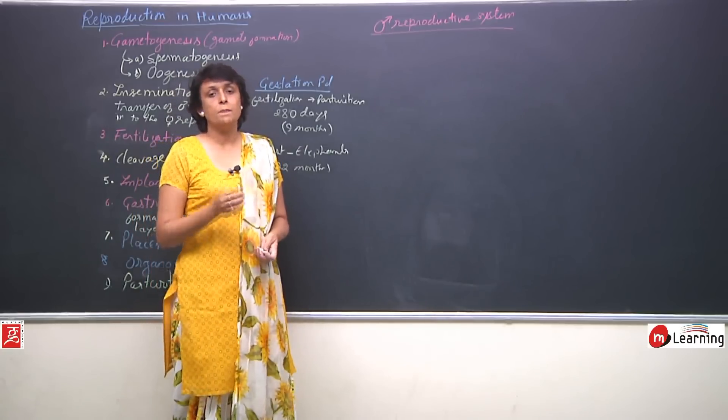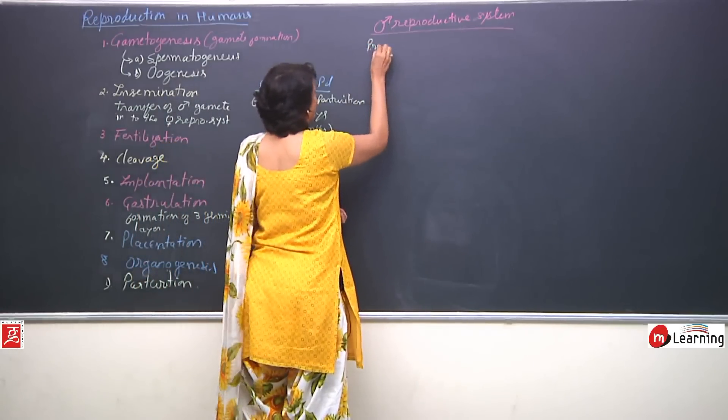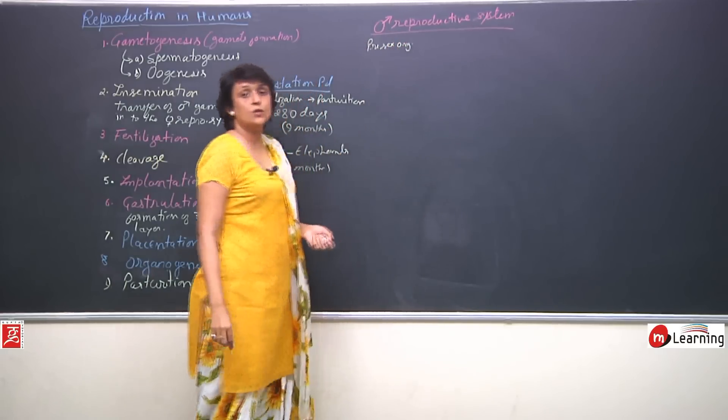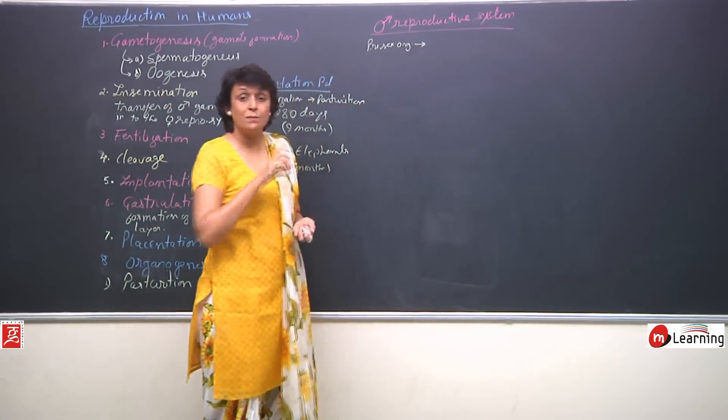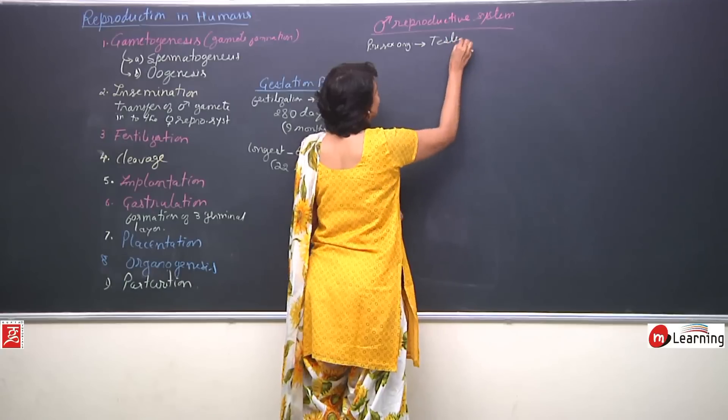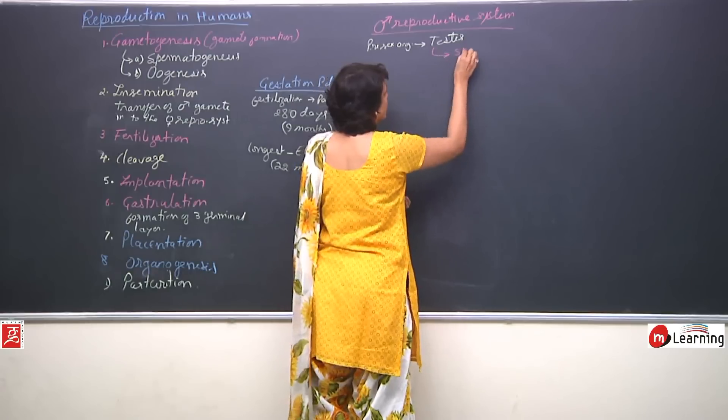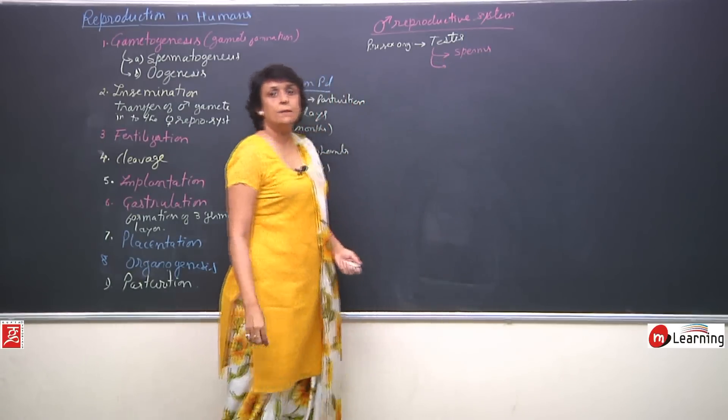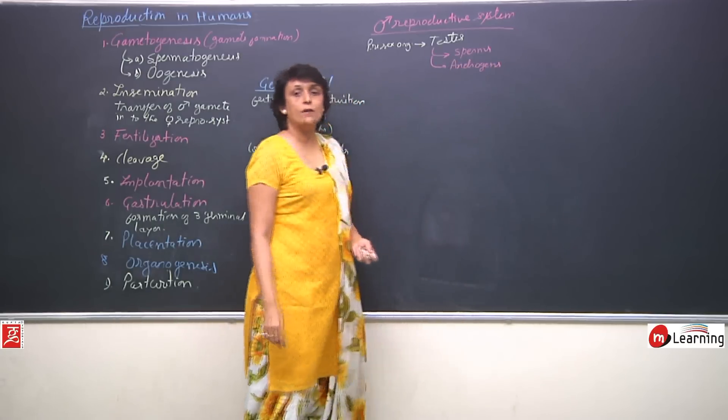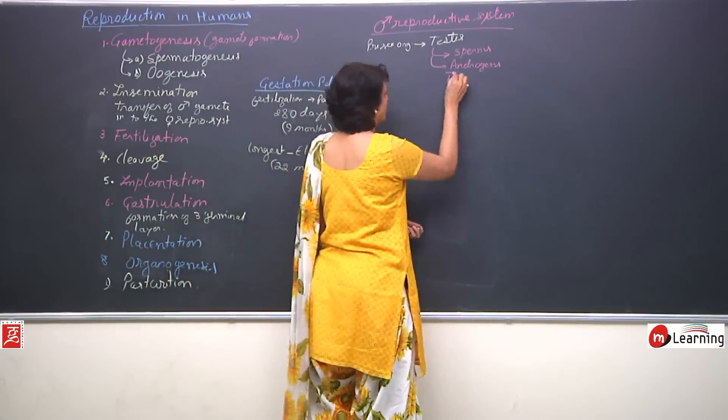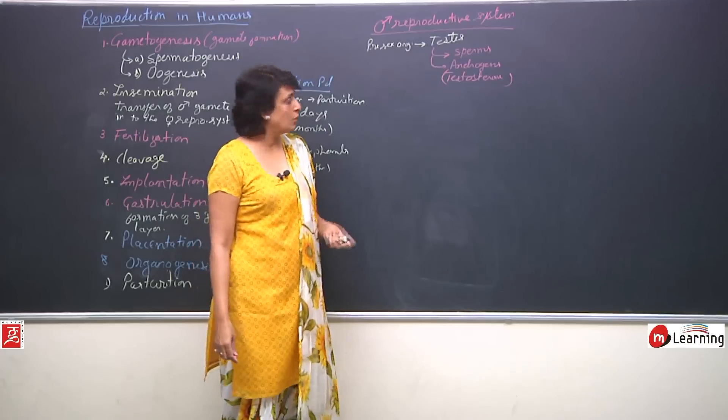In a reproductive system there is a primary reproductive or sex organ and accessory sex organs. So, primary sex organ, primary sex organ is the one which actually produces the gametes. So, in case of male reproductive system the primary sex organ is a pair of testes. These testes they produce two things, one is sperms and second the male sex hormones that is androgens. The most important androgens that we talk of is testosterone. Androgens are male sex hormones.